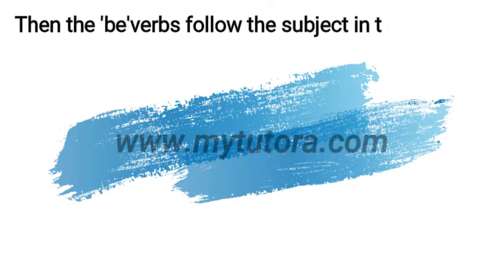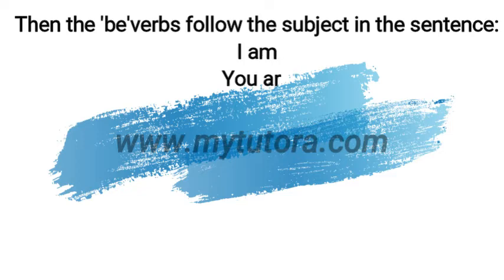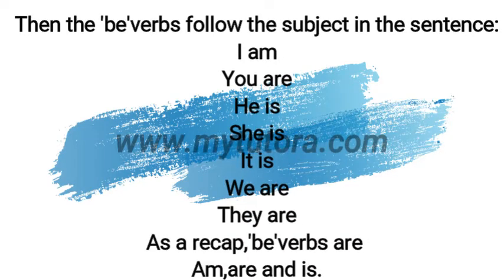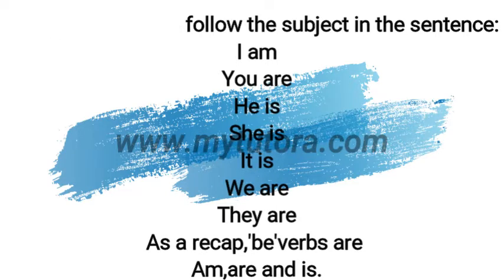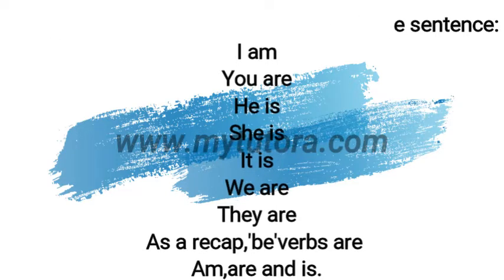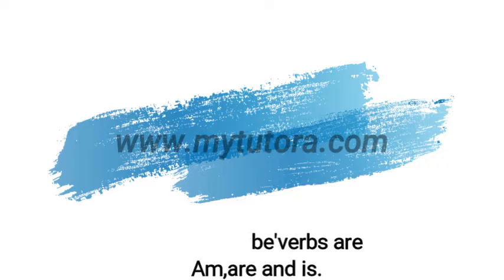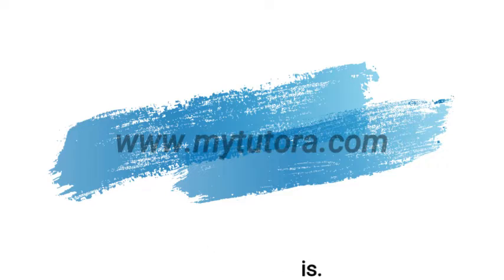Then, the be verbs follow the subject in the sentence. For example: I am, you are, he is, she is, it is, we are, they are. As a recap, the be verbs are am, are, and is.